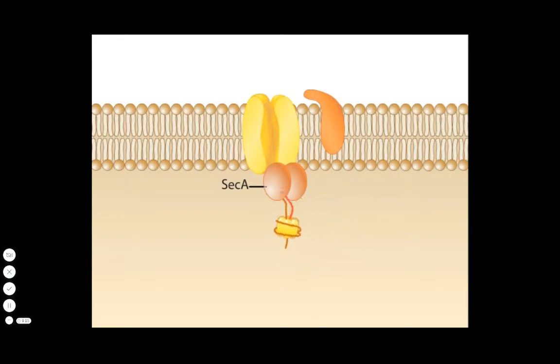SecB delivers the protein to SecA, a structure peripherally associated with the membrane-spanning SecYEG translocon — the pore in the membrane through which the protein will be passed.